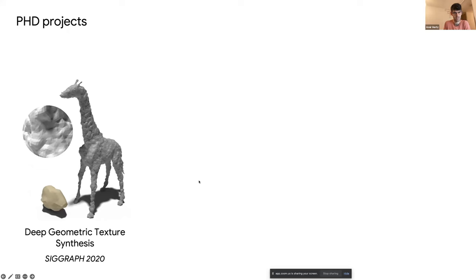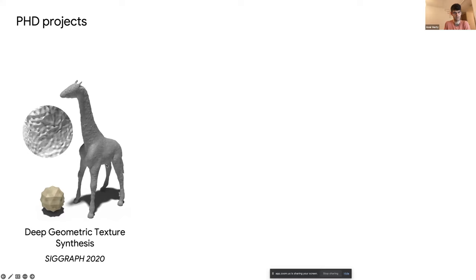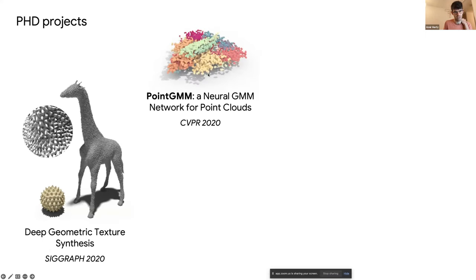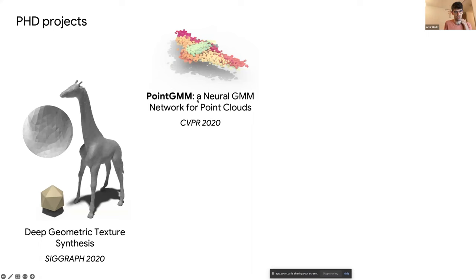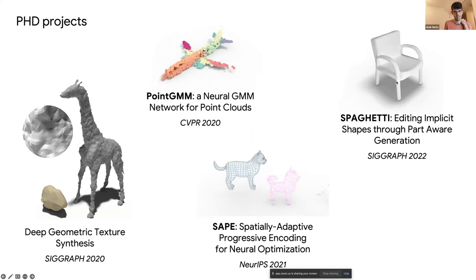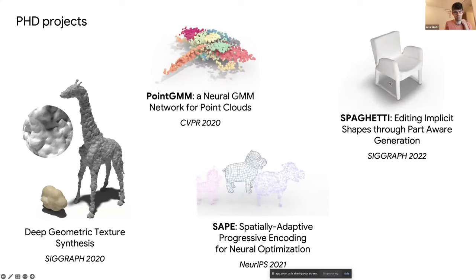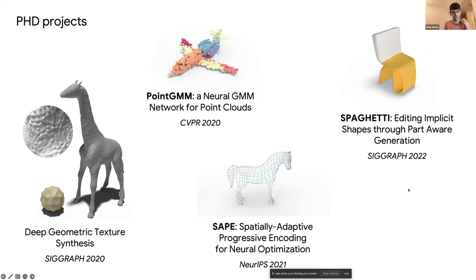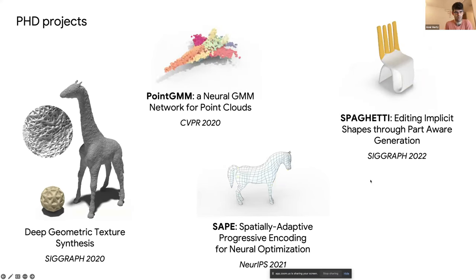One work was geometric texture synthesis, where we train a network to synthesize geometric texture given one reference shape — in this case the golden shape — and applied its geometric texture over the giraffe. Another couple of works were for 3D generative models for 3D shapes, both GMMs and implicit shapes. Other works include SAP, where we developed an optimization technique to transfer mesh from one shape to another.